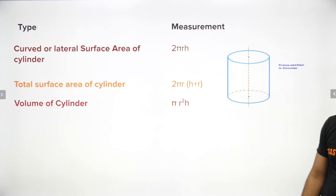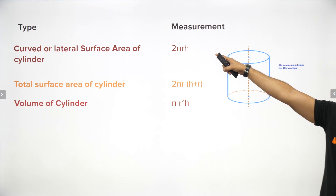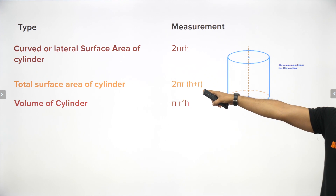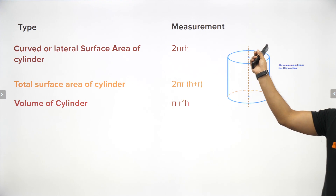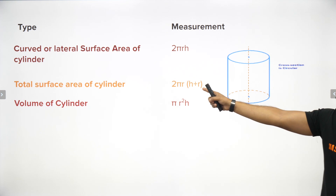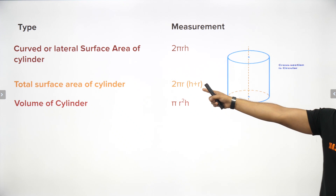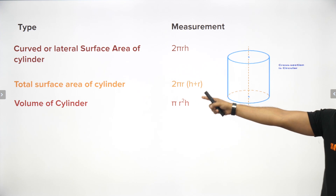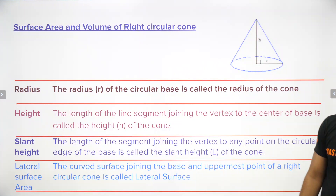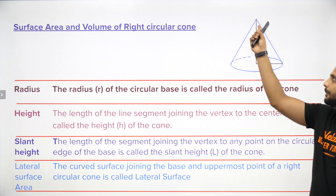For a cylinder: curved surface area is 2πrh, total surface area is 2πrh + 2πr² — because there's a circle of area πr² at the top and at the bottom. Taking 2πr common gives 2πr(h + r). Volume of a cylinder is πr²h.